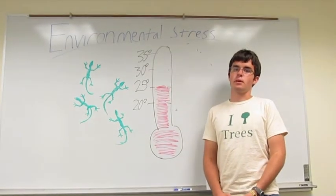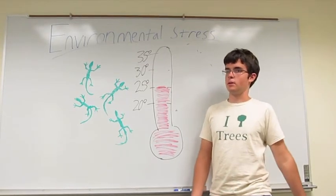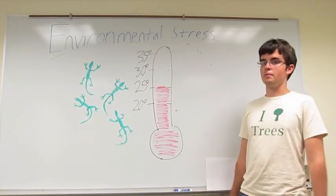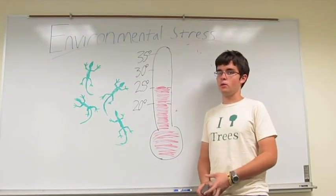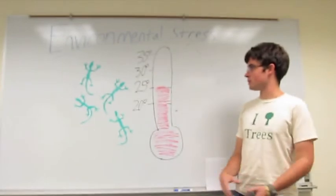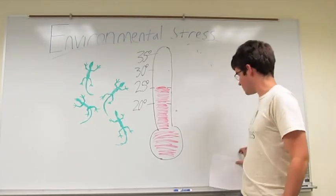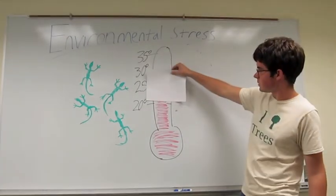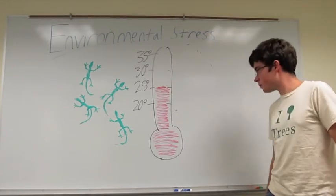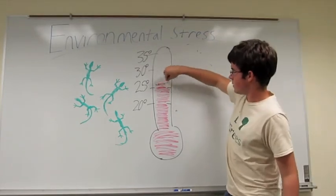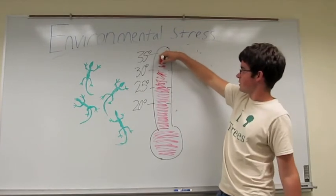The second type of stress we're going to cover is environmental stress. An example I have here is of sand lizards. Sand lizards as embryos develop normally at 25 degrees Celsius. If you were to lower the temperature to 20 degrees or increase it to, say, 30 degrees or maybe even 35 degrees,